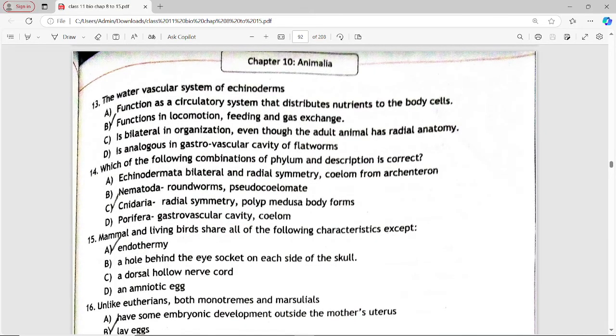Next is: the water vascular system of echinoderms. Options are functions as a circulatory system that distributes nutrients to body cells, functions in locomotion, feeding and gas exchange, is bilateral in organization even though the adult animal has radial anatomy, is analogous to gastrovascular cavity of flatworms. Answer is option B, functions in locomotion, feeding and gas exchange.